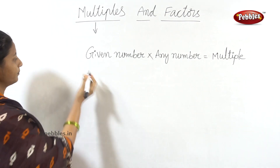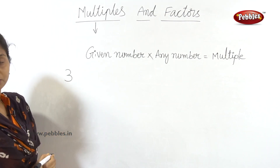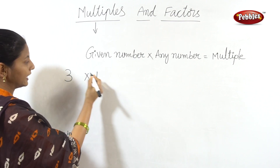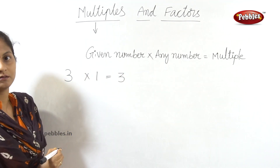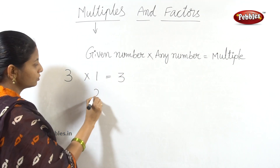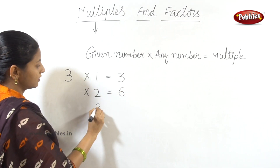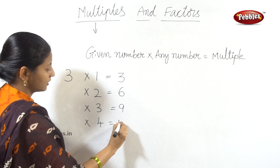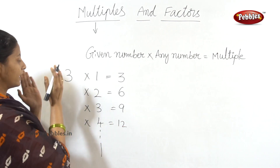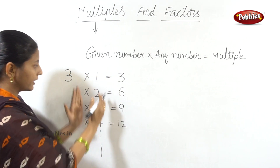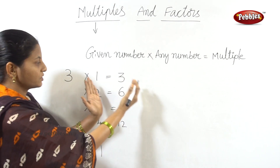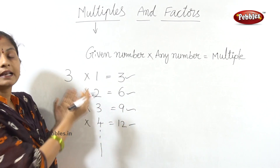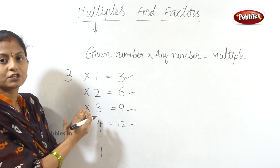For example, take the given number 3. I will multiply numbers by 3. So we multiply from 3, and 3 multiplied by 2 gives 6. The result is a multiple of 3. Multiples are obtained by multiplying 3 with natural numbers — the 3 times table.